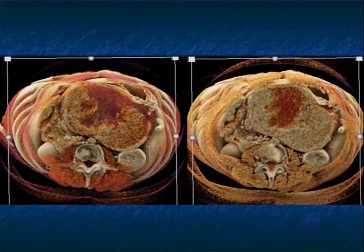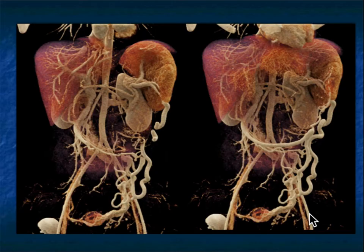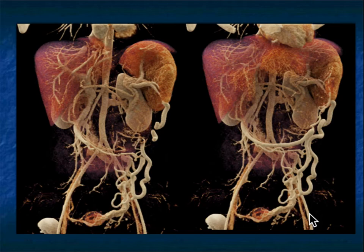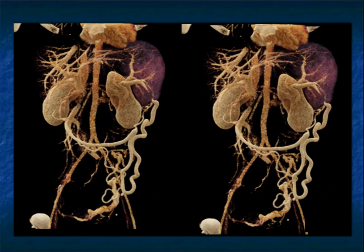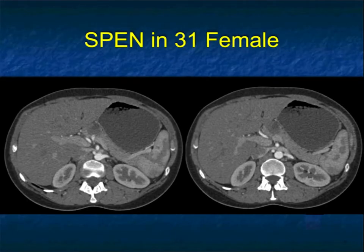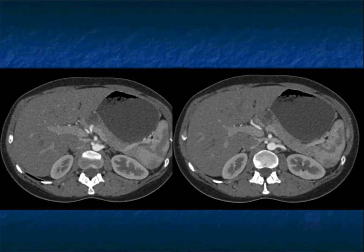Cinematic rendering also accentuates the difference between the cystic and solid components in this patient's SPNET tumor. As I show a range of projections, when I do cinematic rendering I create arterial maps and venous maps so the surgeon knows precisely what to do. This is particularly important when the surgeon wants to do laparoscopic surgery. Another example — 31-year-old, tumor in the body of the pancreas, cystic and solid, well defined though it can be subtle.